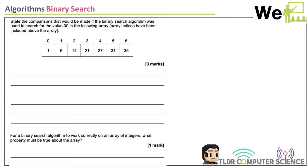In a binary search, unlike linear search which starts at the beginning, you find the middle. Binary search is about breaking it in half. What would the middle item be? Now that I'm searching for 30, is 21 going to be higher or lower than 30?